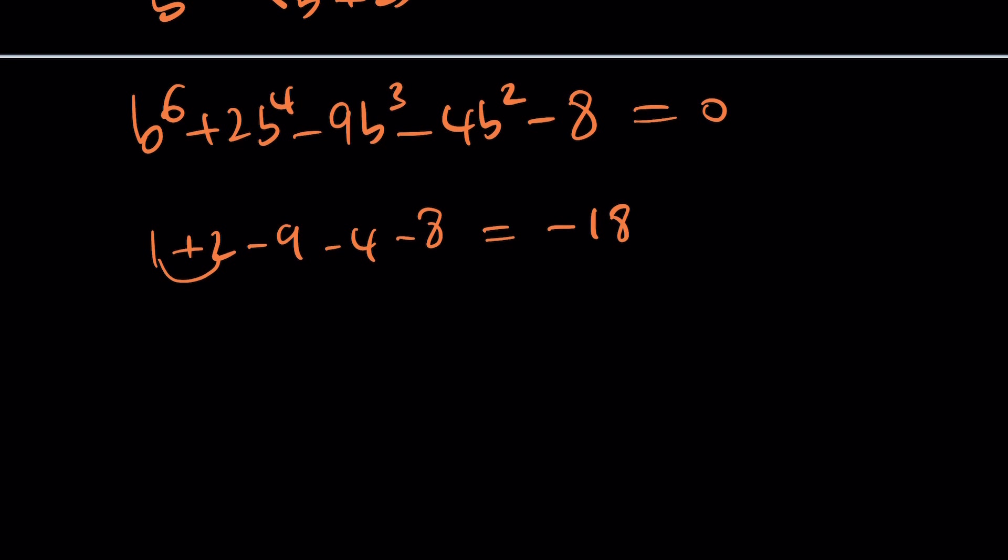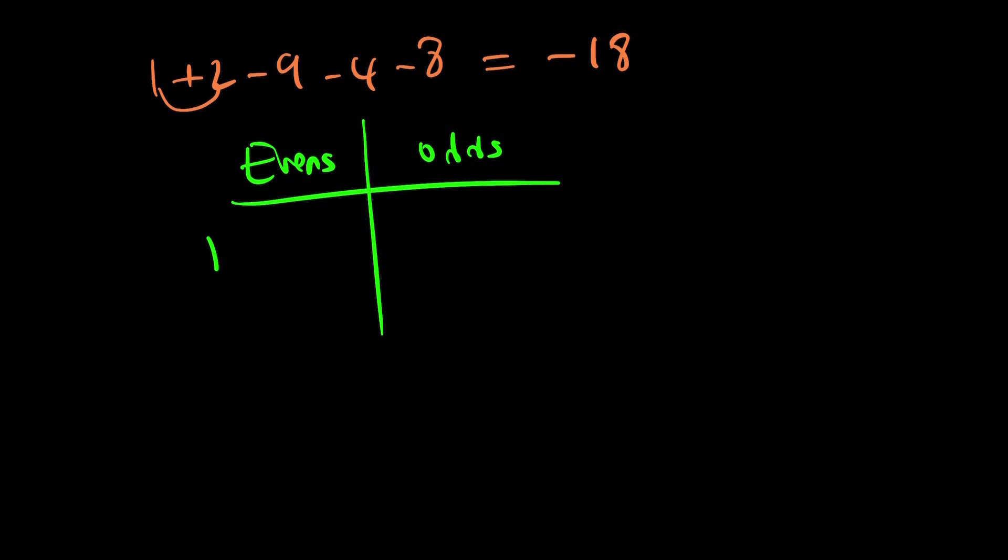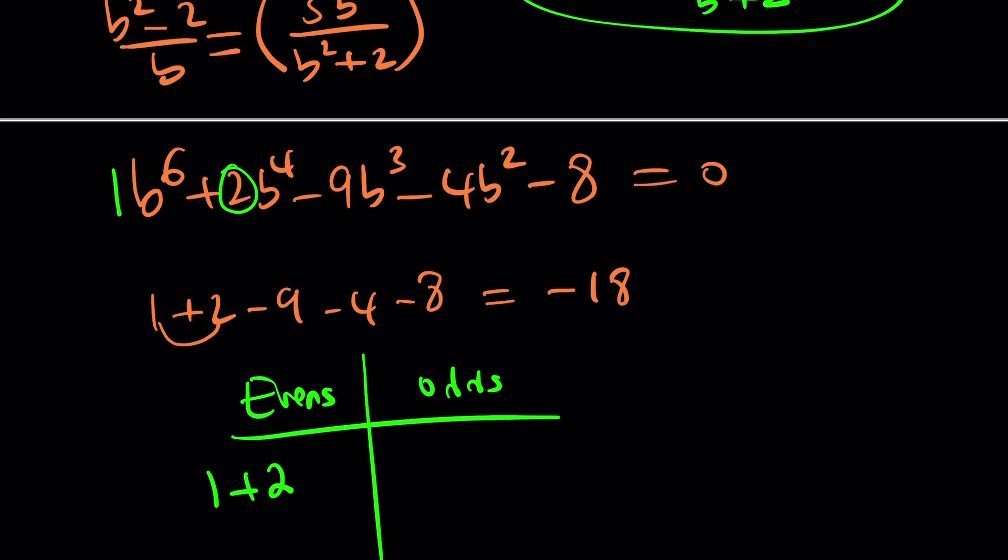Let's check the second thing. The sum of the evens and odds. What do I mean by evens? The coefficient of even powers of b. For example, one b to the six. Let's make two groups. So, I have in evens, I have the one, and then I have the two, and then I have the negative four, and I have the negative eight. Why do I have to include negative eight? Because it's negative eight b to the power zero, and zero is an even number. Did you not know that? You knew that, right? I mean, zero is even because it's divisible by two.